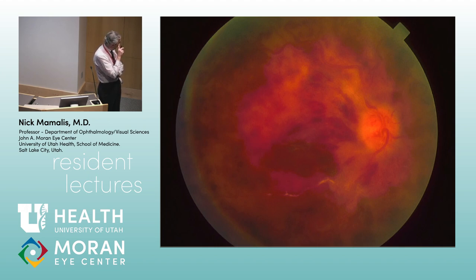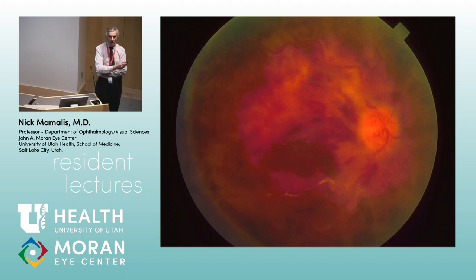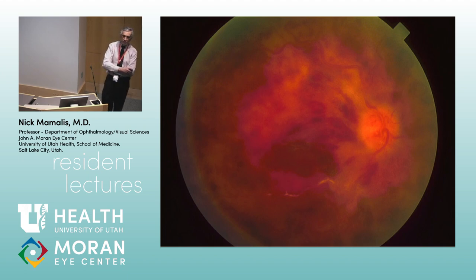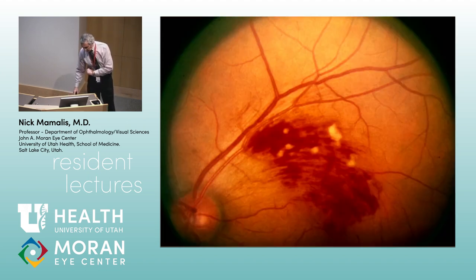This is very different from central retinal artery occlusion — this is central retinal vein occlusion, the 'blood and thunder' retina. Like a car wreck on the freeway backing everything up, you get backup of blood in all four quadrants. They call this the blood and thunder retina.